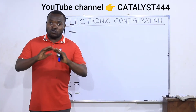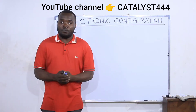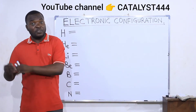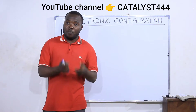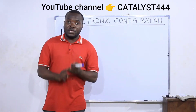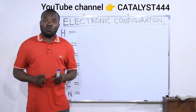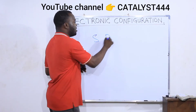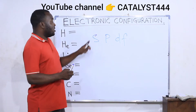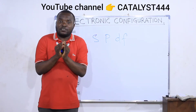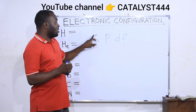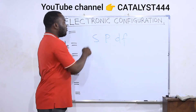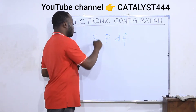These electrons are found in the orbitals, and there are different types of orbitals: we have the s orbital, the p orbital, the d orbital, and the f orbital. Among these, the s orbital has the lowest capacity — it is the orbital that carries the lowest number of electrons. In fact, the s orbital carries a maximum of two electrons.